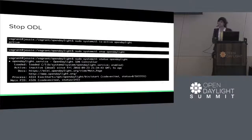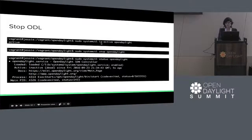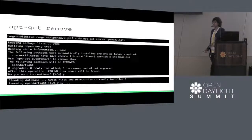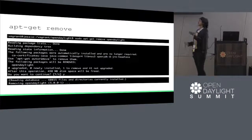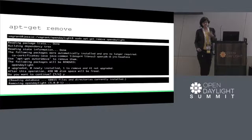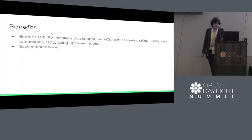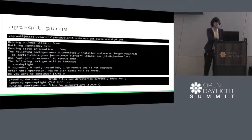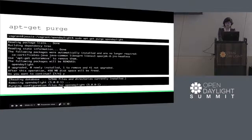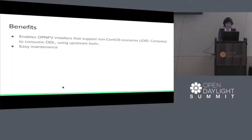Once this is done, if you want to stop OpenDaylight, you can again use systemd to just stop it. You can check whether OpenDaylight is active or not — it says it's active. I stop OpenDaylight and then see that the status is dead, inactive. A Debian package: we build, we install — and to remove, sudo apt-get remove will remove all the OpenDaylight folders and files. sudo apt-get purge will remove all the configuration files as well.